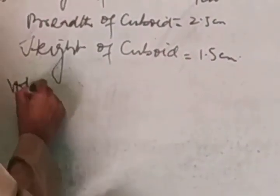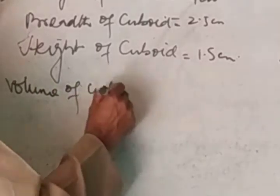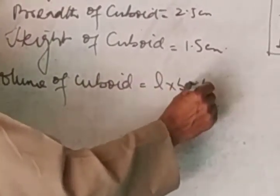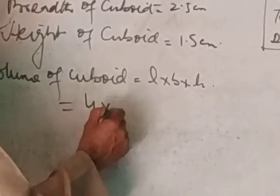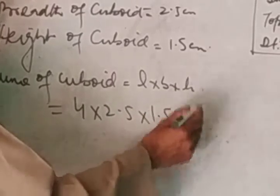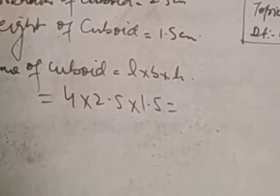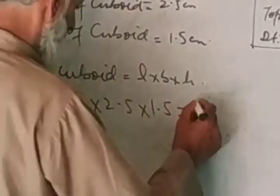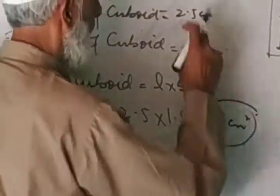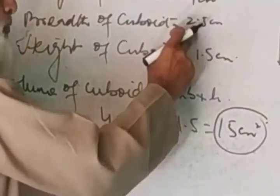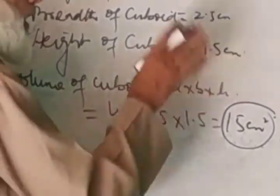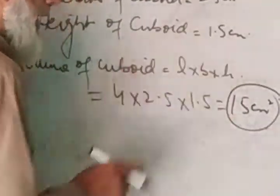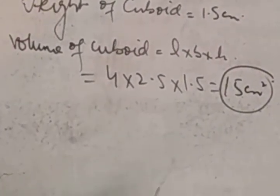The dimensions of the cuboid are: length 1.5 cm, width 1.5 cm, and height 1.5 cm.